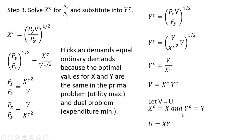This result follows from the fact that the Hicksian demands equal the ordinary Marshallian demands, because the optimal values for x and y are the same in the primal problem — the utility maximization problem — and the dual problem — the expenditure minimization problem. Hope you found this video helpful.